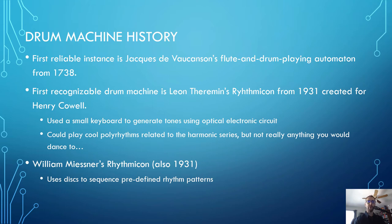But the first truly modern drum machine, as we would understand it, doesn't come around for another 200 years. In 1931, Leon Theremin, who created the Theremin, was asked to create a drum machine for composer Henry Cowell, which he called the Rhythmicon. Using a small keyboard, you could generate tones using optical electronic circuitry, similar to tone wheels. This allowed you to play polyrhythms based on the harmonic series of overtones, but it's not really anything you would dance to.